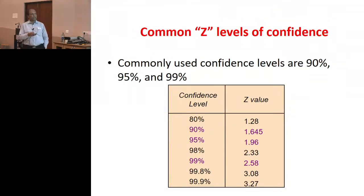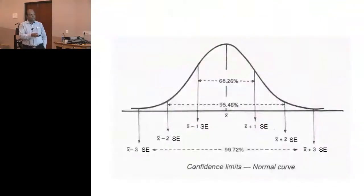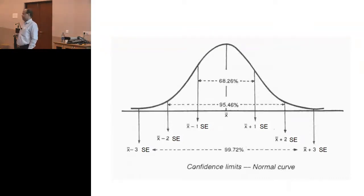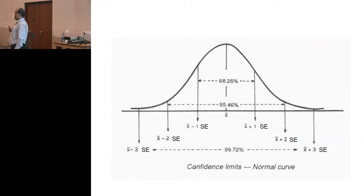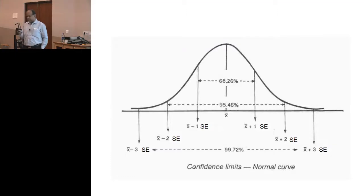So 1.96 times, approximately two standard errors, covers 95% of the area. You cannot say you will get only exactly 80%. What you are saying is that the estimate which you get after the study will be somewhere between a lower limit and an upper limit.